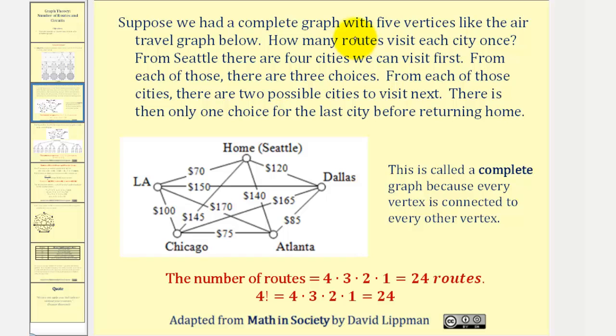Suppose we had a complete graph with five vertices, like the air travel graph below, which we saw in a previous lesson. How many routes visit each city once? Well if we start at home, which is Seattle,